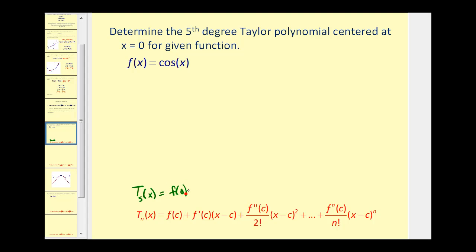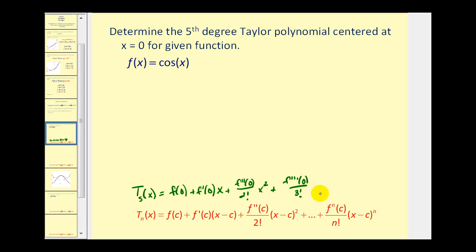We're going to have f of zero, plus f prime of zero times x — since c is zero — plus the second derivative evaluated at zero divided by two factorial times x squared, plus the third derivative evaluated at zero divided by three factorial times x to the third, plus the fourth derivative evaluated at zero divided by four factorial times x to the fourth, and finally plus the fifth derivative evaluated at zero divided by five factorial times x to the fifth.